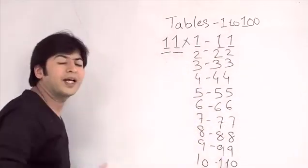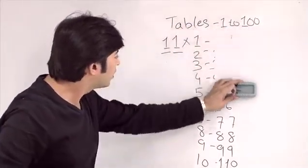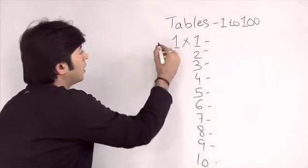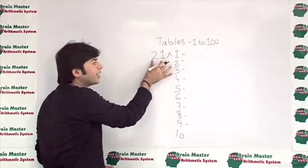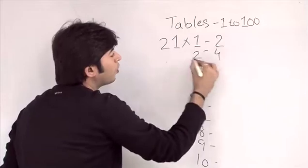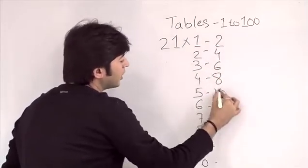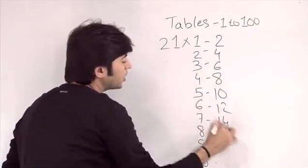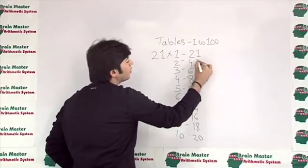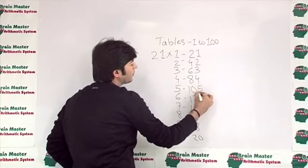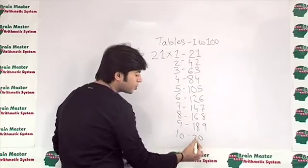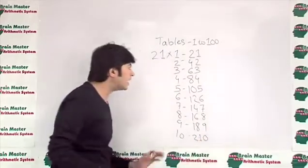Now let's do the table of 21. We split 21 into its individual digits: 2 and 1. On the left side we write the table of 2, and on the right side the table of 1. So: 21×1=21, ×2=42, ×3=63, ×4=84, ×5=105, ×6=126, ×7=147, ×8=168, ×9=189. For 21×10: 2×10=20, 1×10=10 — the 1 merges in, giving 210.